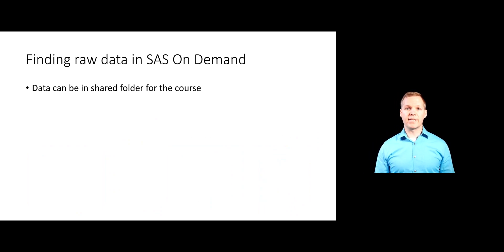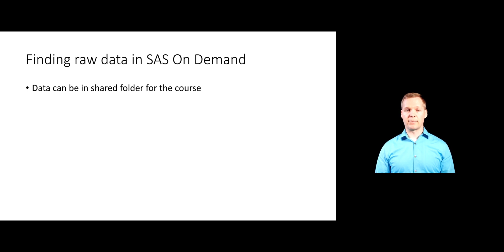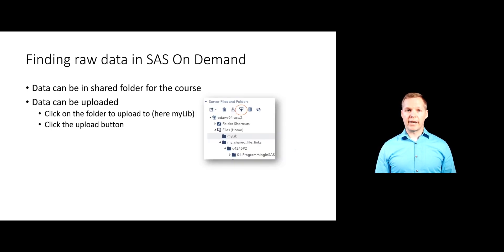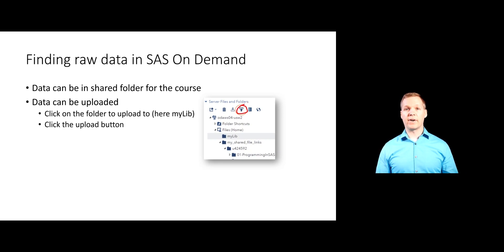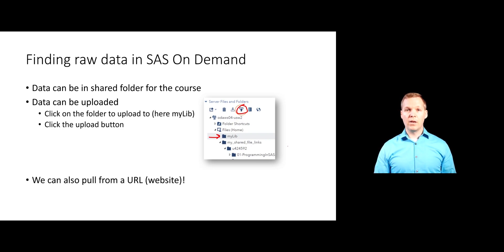When working with SAS on demand, we need to tell SAS how to find the data set. SAS on demand can only find data that's in our shared folder or that you've uploaded yourself. To upload your data, go to the folder you want, click the upload button, find the file on your computer, and upload it. It will show up as a raw data file in your folder. Another option is to read certain data files in from a URL — directly from a website. We'll see examples of that.